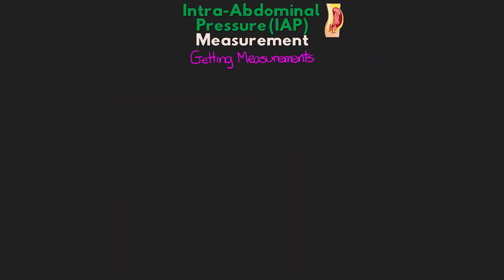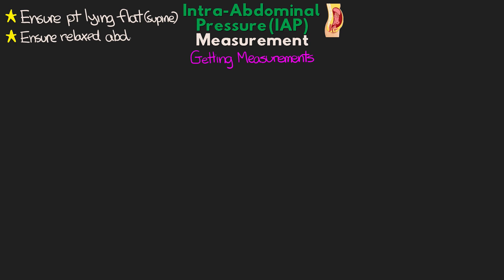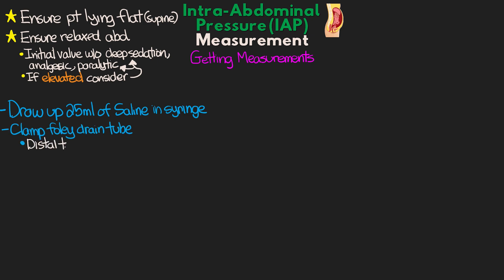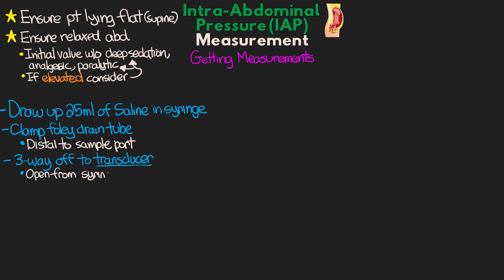Now let's go over how we actually get our measurements. Once everything is prepared and ready to go, ensure that the patient is lying flat in the supine position with a relaxed abdomen — feel around to make sure they're not contracted or tensed up. For initial evaluation, we can get this number without deep sedation, analgesia, or paralytic. That said, if the initial reading is elevated, we definitely want to consider those options to rule out any potential false positives. Using the syringe attached to the most distal stopcock, draw up 25 mLs of saline. Next, clamp the Foley drainage tubing just distal to the sampling port using the built-in clamp or the chest tube or Kelly clamp. Once clamped, turn the three-way on the syringe off to the transducer, making it open from the syringe to the patient, then infuse the 25 mLs of saline into the Foley and ultimately the bladder.